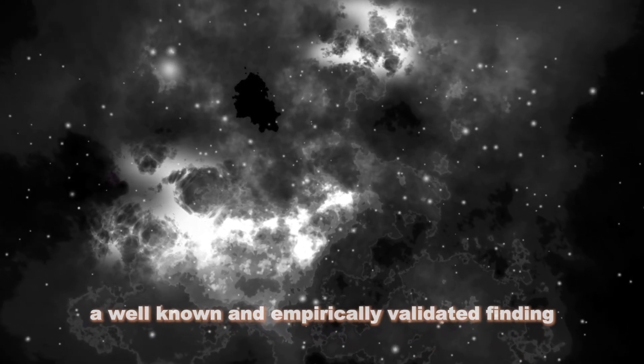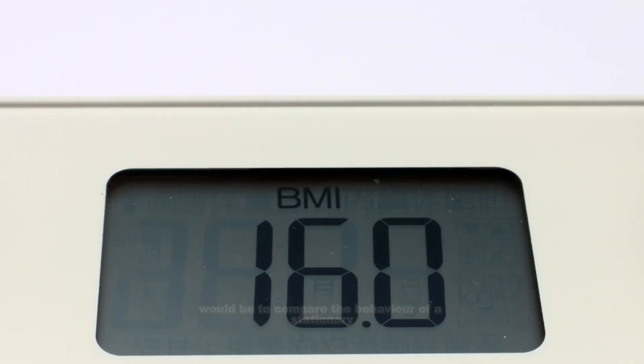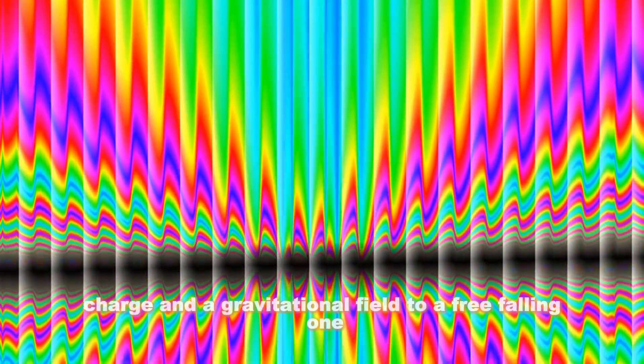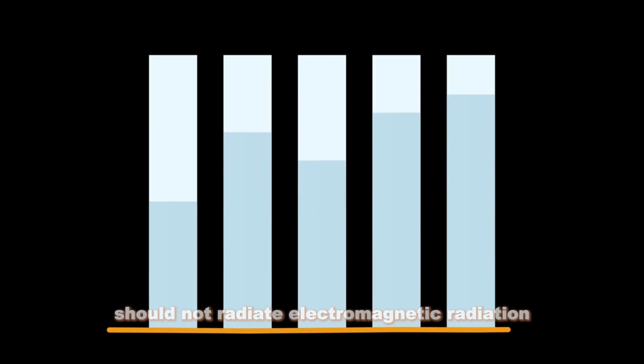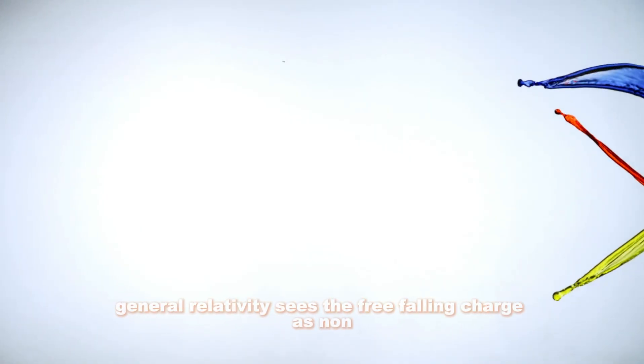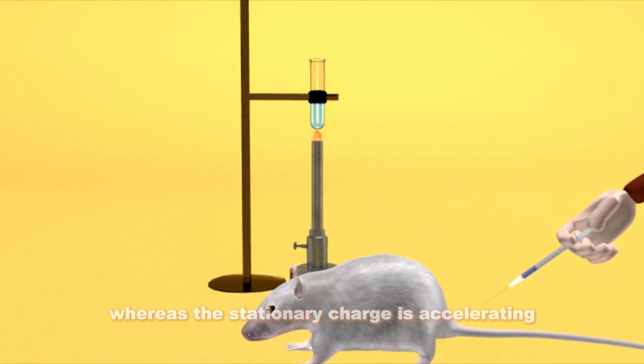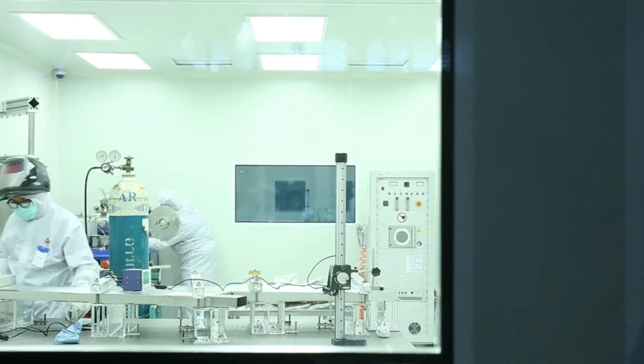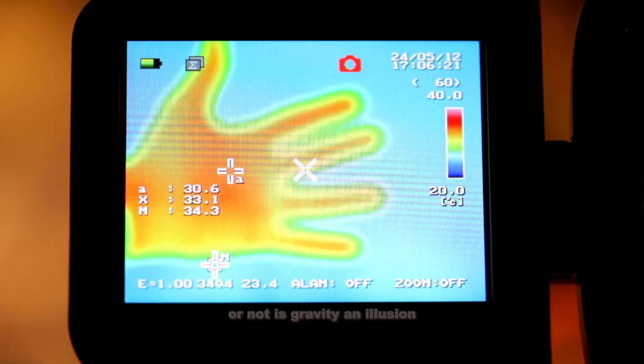A well-known and empirically validated finding is that accelerating charges radiate electromagnetic radiation. So one conceptually simple experimental test would be to compare the behavior of a stationary charge and a gravitational field to a free-falling one. If a more Newtonian picture of gravity is correct, well, then the stationary charge should not radiate electromagnetic radiation, but a free-falling one is accelerating and therefore it should radiate. In contrast, general relativity sees the free-falling charge as non-accelerating. It's just going on a straight line path through curved spacetime, whereas the stationary charge is accelerating and therefore it should give off electromagnetic radiation. Now, thus far, logistical challenges have prevented anyone from actually carrying out this experiment, but what you believe will happen reveals what you truly think about the nature of gravity. Do you think that a freely falling charge will radiate electromagnetic radiation or not? Is gravity an illusion?